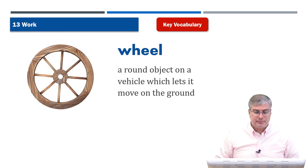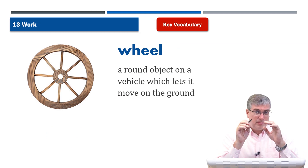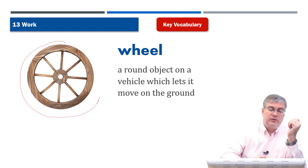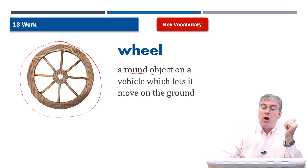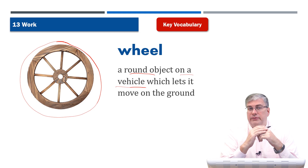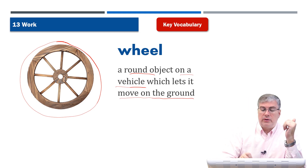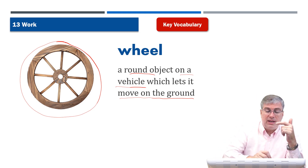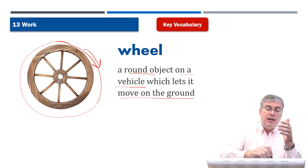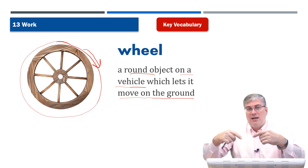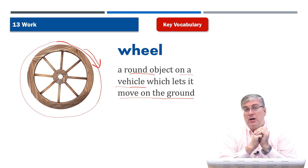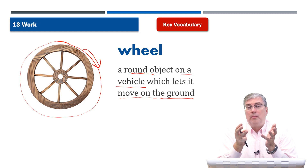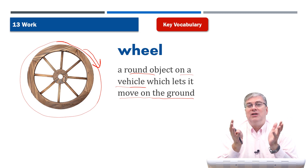Next, wheel. We saw wheel before on the pulley, but a wheel of course is also on a wagon or on a car. It's a round object — the shape of it is round — and it's a round object on a vehicle, but it could also be on a pulley, which lets it move on the ground. On a vehicle, the wheel lets it move on the ground because the wheel can turn easily. It's round — very easy to turn one way or the other — and as it turns it moves across the ground. Wheels were a great invention many thousands of years ago.